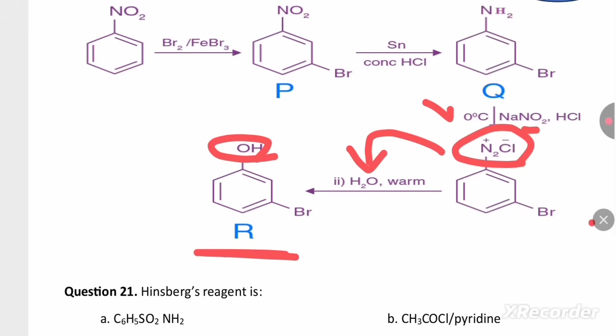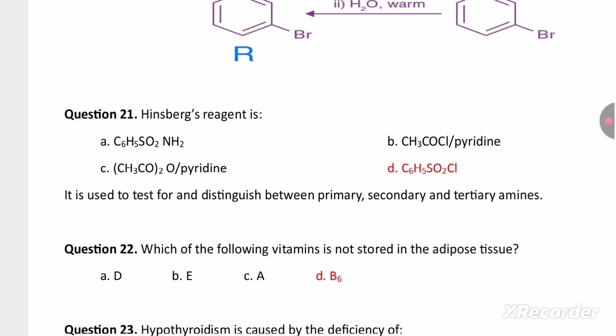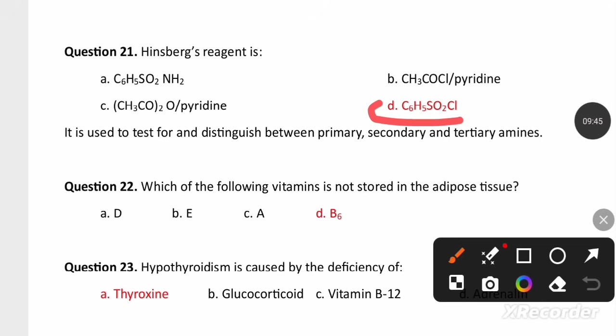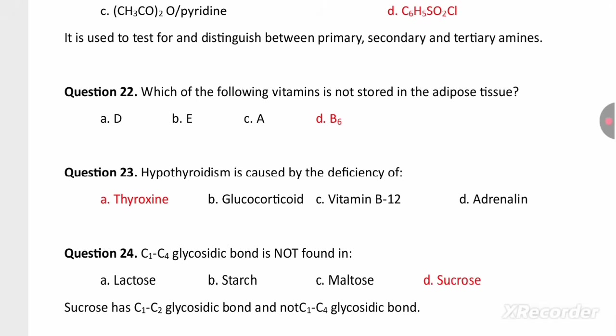Hinsberg reagent is benzene sulfonyl chloride (C6H5SO2Cl), and it is used to differentiate primary, secondary, and tertiary amines.